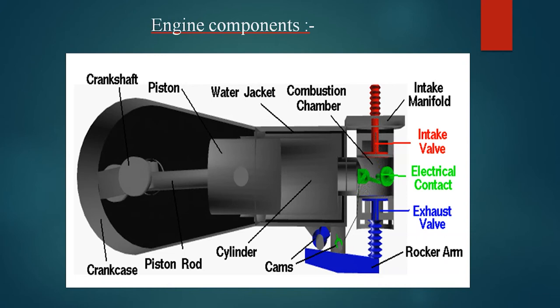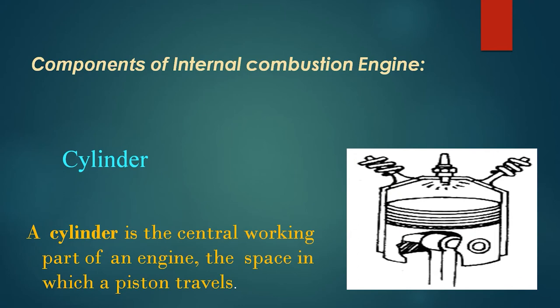Engine components are shown in the diagram. You can see that on the upper side there is an intake valve on the left, an exhaust valve on the right, and in between there is an electrical contact where a spark plug or fuel injector will be used. The piston is shown here, and the cylinder is where the working substance is kept. The cylinder contains the working fluid or working substance.